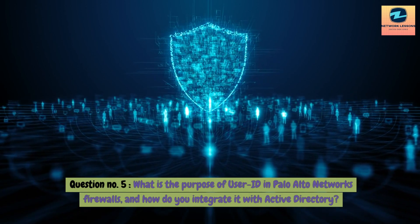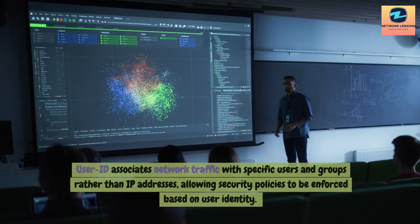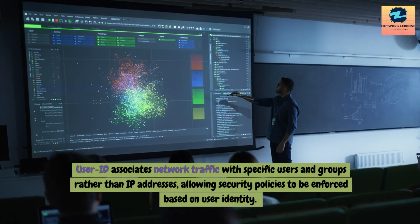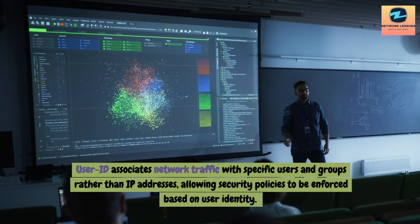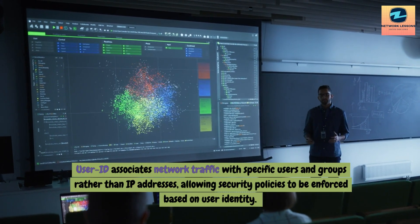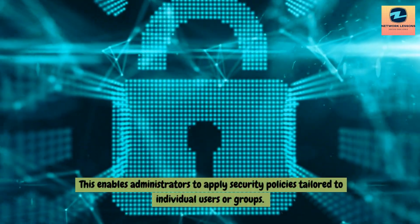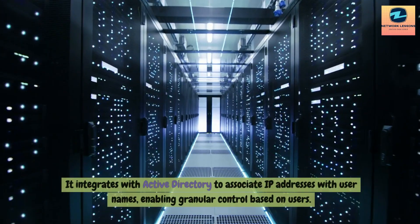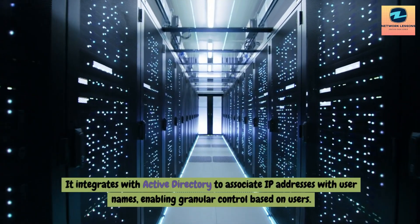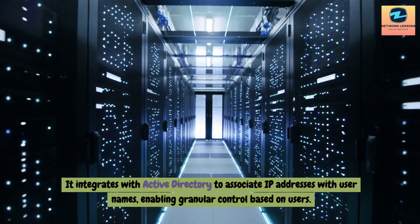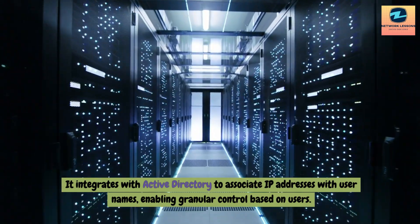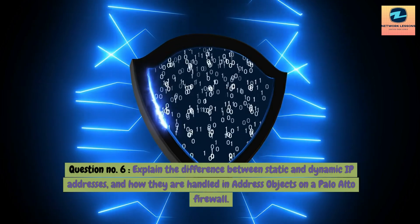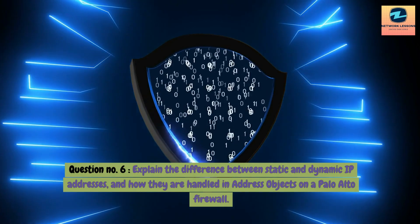Question 6: What is the purpose of User-ID in Palo Alto Networks firewalls and how do you integrate it with Active Directory? Answer: User-ID associates network traffic with specific users and groups rather than IP addresses, allowing security policies to be enforced based on user identity. This enables administrators to apply security policies tailored to individual users or groups. It integrates with Active Directory to associate IP addresses with usernames, enabling granular control based on users.